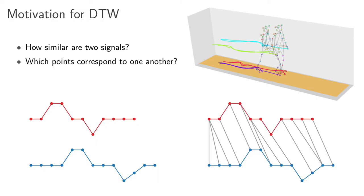Dynamic time warping is an algorithm which tells us how to align two signals of different durations. If I feed the red curve and the blue curve — with different numbers of points — to dynamic time warping, the result shows gray lines indicating which points on one curve correspond to points on the other. The algorithm figures out that this point here should be compared to that point there, and a single point can even be aligned to several other points.